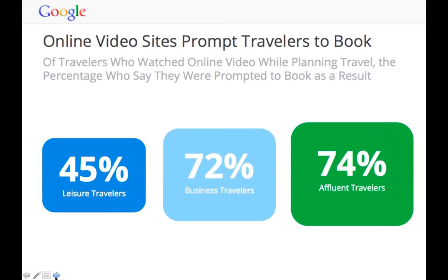Online video sites prompt travelers to book, which is exactly what we want to hear. Of the travelers who watched online video while planning travel, 45% of leisure travelers say they were prompted to book as a result. So if you had a good video up there, 45% of them might well be prompted to book — quite impressive conversion. Business travelers are even more likely to book, and affluent travelers as well. So depending on who your target market is, there are some really great statistics there.